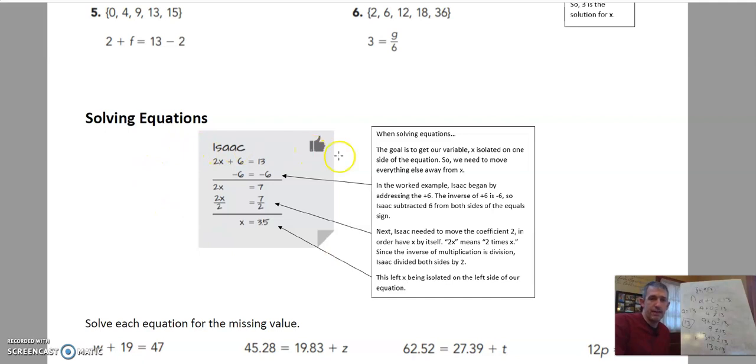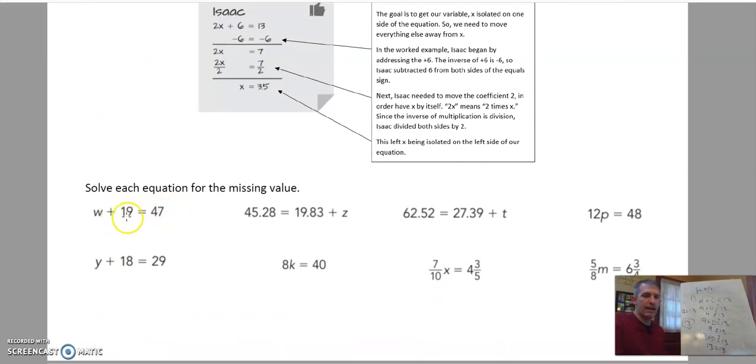Then to move on: solving equations. When solving equations, the goal is to get our variable x isolated on one side of the equation, so we need to move everything else away from x. In the worked example, Isaac began by addressing the plus 6. The inverse of plus 6 is minus 6, so Isaac subtracted 6 from both sides of the equation sign. This gets into two-step equations, which you'll probably learn about next year. Isaac needed to move the coefficient 2 in order to have x by itself. 2x means 2 times x. Since the inverse of multiplication is division, Isaac divided both sides by 2. So what's happening to the variable? x is being multiplied by 2, added by 6. The last thing we said is the first thing we want to undo, so we're undoing the 6, and then we're undoing the 2, doing the opposite in each case.